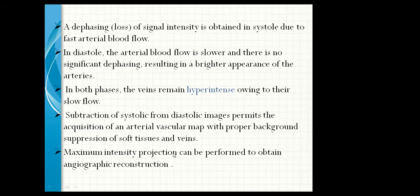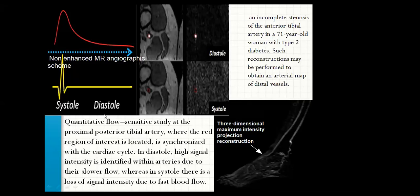Maximum intensity projection can be performed to obtain an angiographic reconstruction. This is a non-enhanced MR angiographic scheme showing a quantitative flow-sensitive study of the proximal posterior tibial artery, synchronized with the cardiac cycle. In diastole, high signal intensity is identified within the artery due to slow flow, whereas in systole there is a loss of signal intensity due to fast flow. This three-dimensional maximum intensity projection reconstruction shows an incomplete stenosis of the anterior tibial artery in a 71-year-old woman with type 2 diabetes. Such a reconstruction may be performed to obtain an arterial map of the distal vessels.